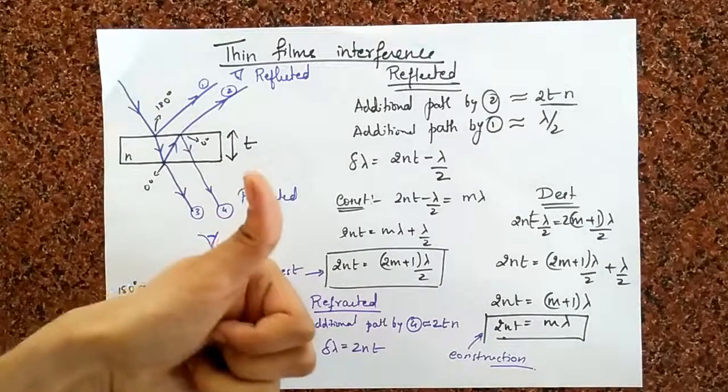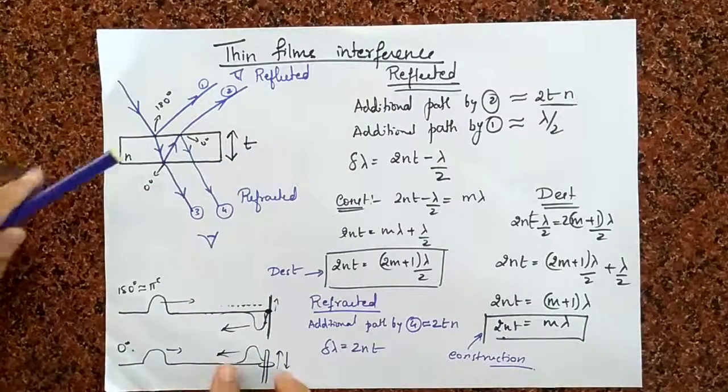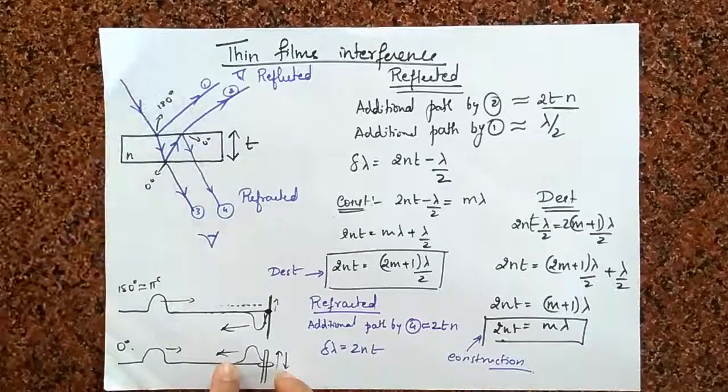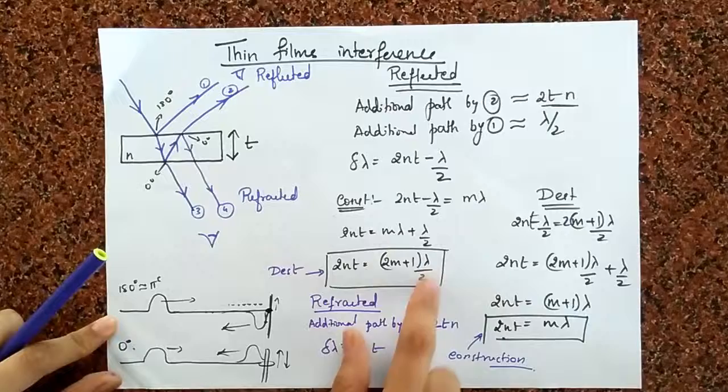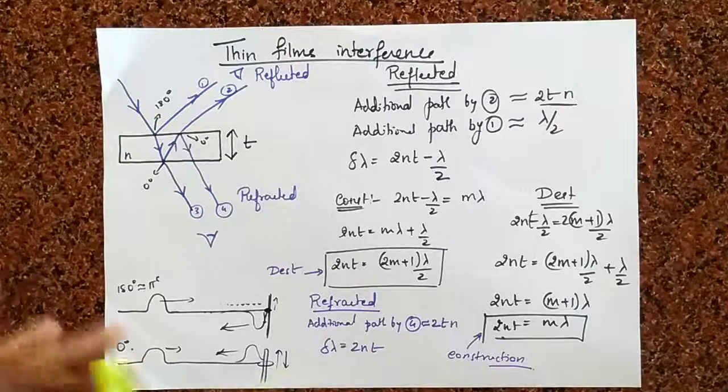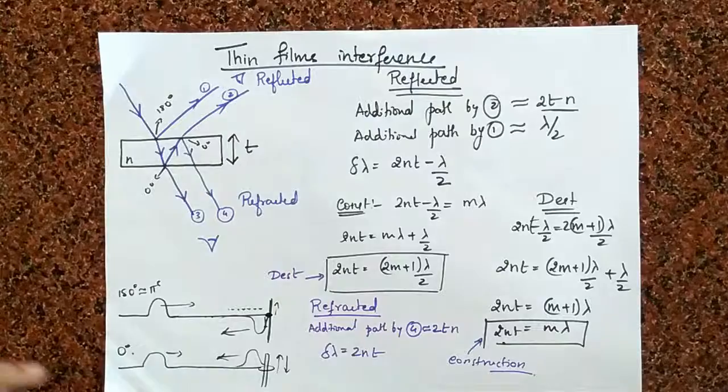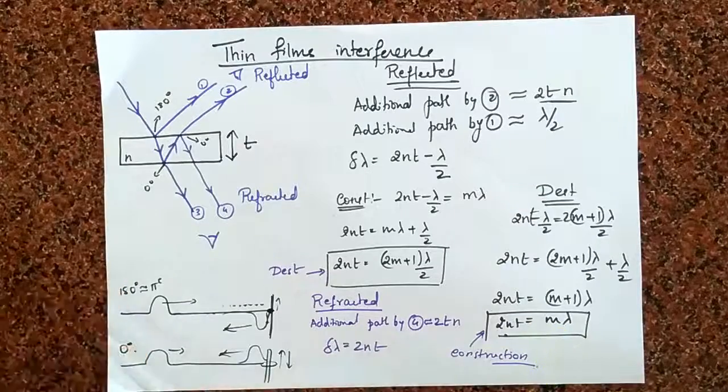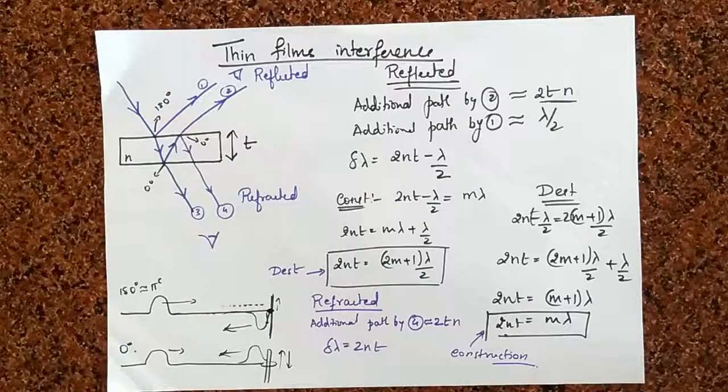We can now use a rule of thumb. The rule of thumb when it comes to thin film interference is going to be that if you find that there is going to be a net phase shift between the two interfering waves, then you can use that for construction, 2nt is going to be an odd multiple of lambda by 2, which is an unusual case, you can say, because you have 180 degree phase shift. And if you have no net phase shift like you see in the refracted case, then what that means is that you're going to have 2nt equal to an integral multiples of lambda, which I will say is the usual case. That's the rule of thumb that we can use now when it comes to thin film interferences.